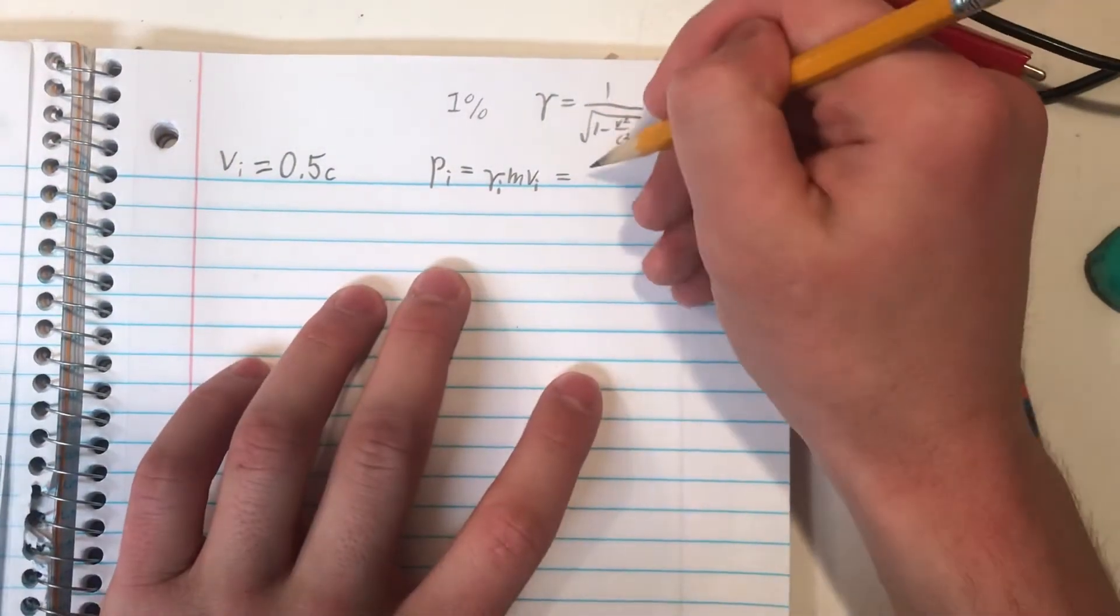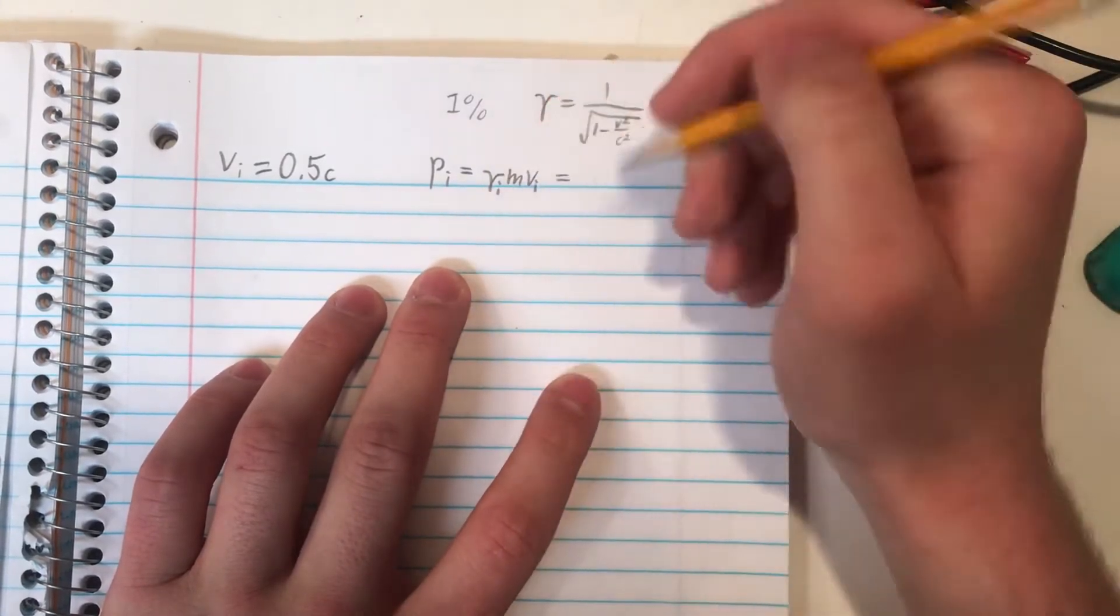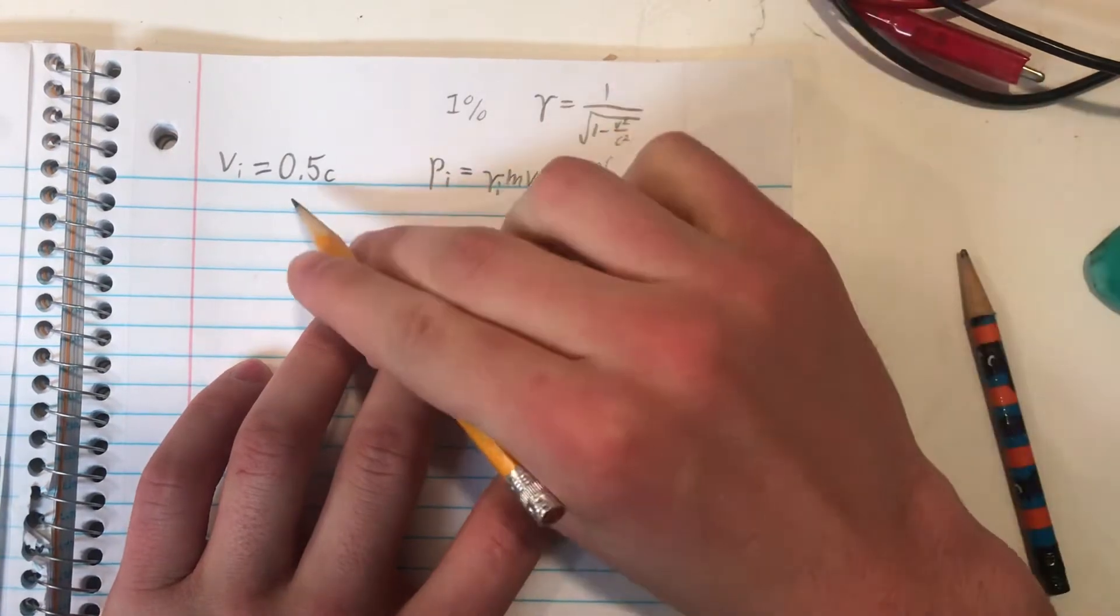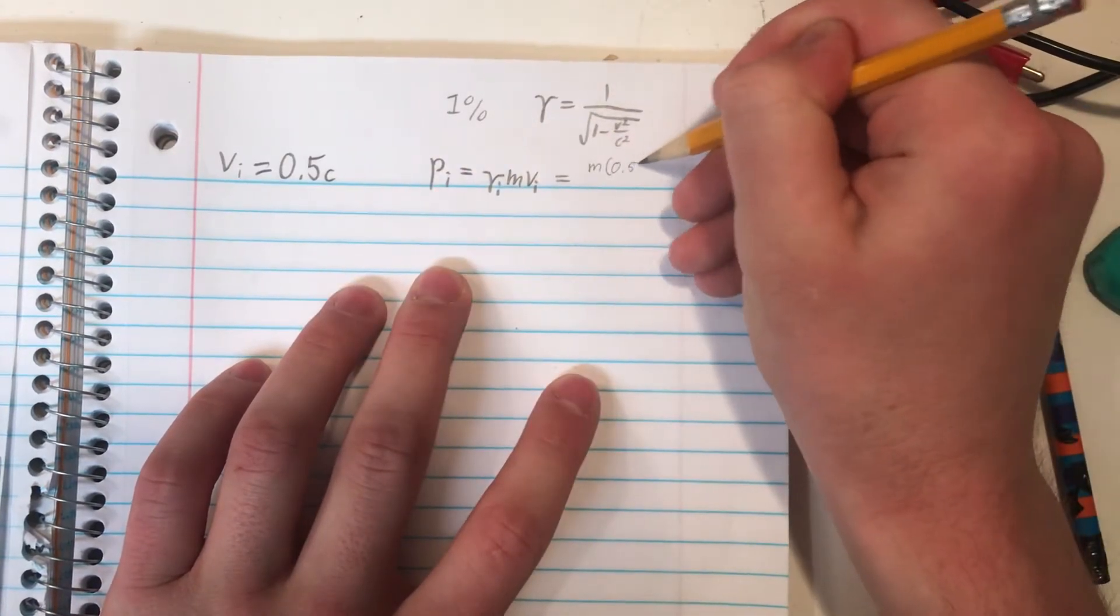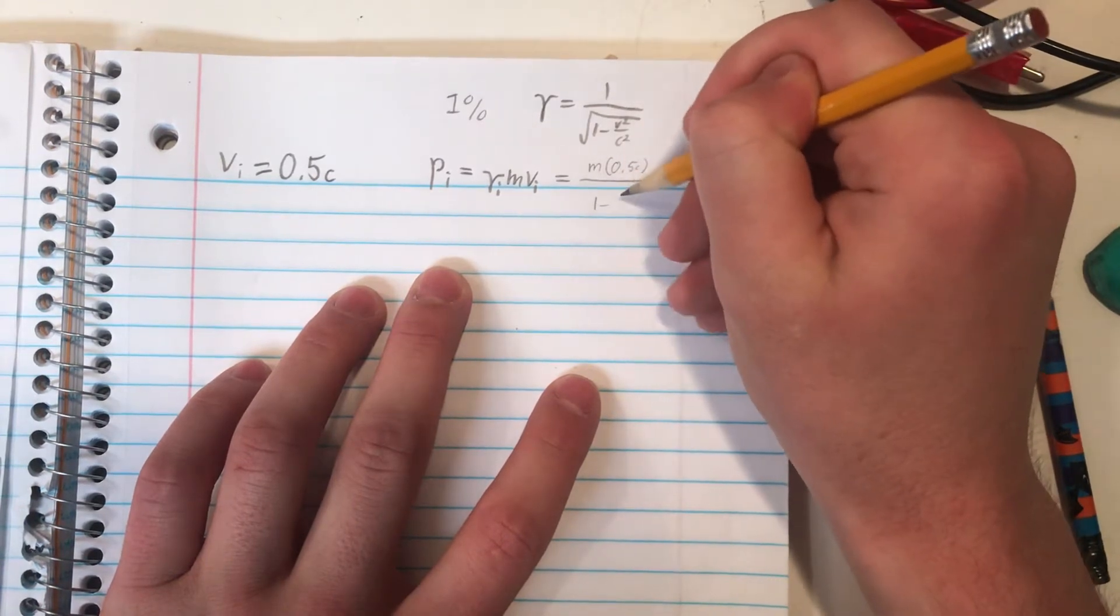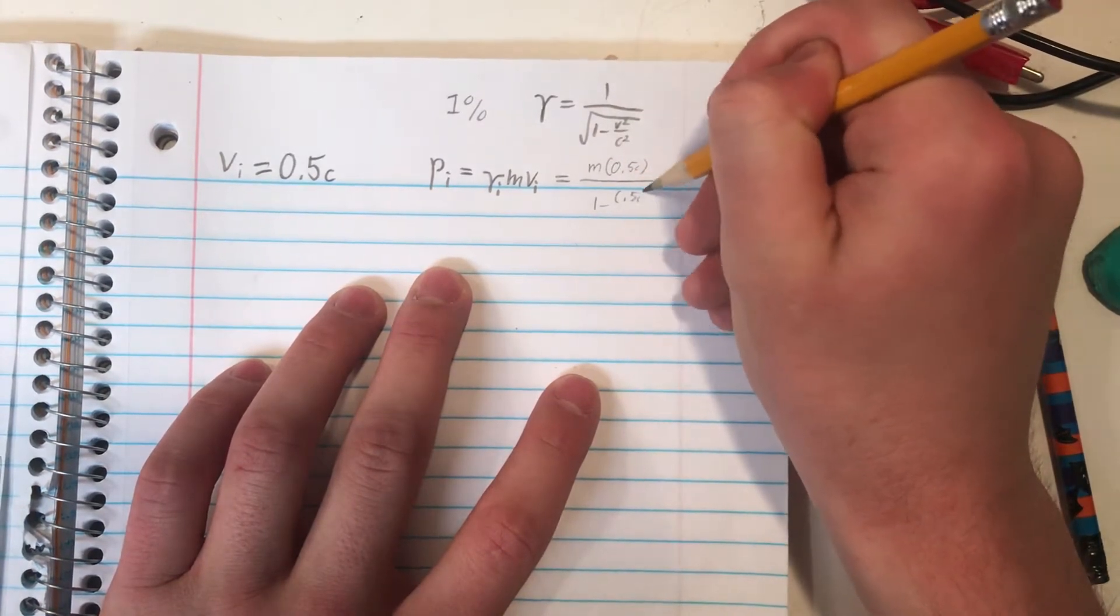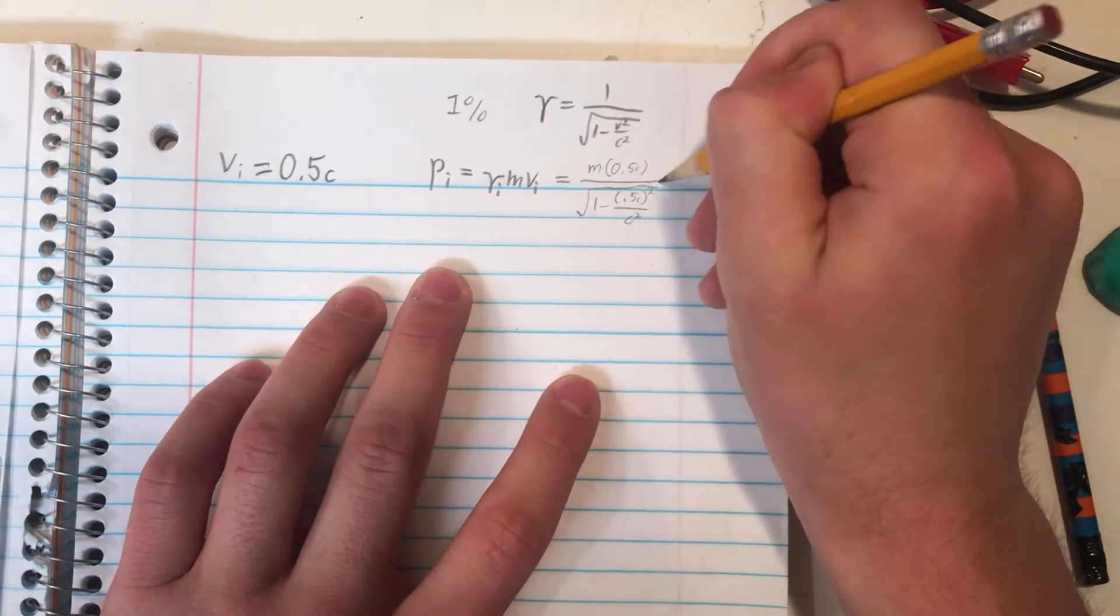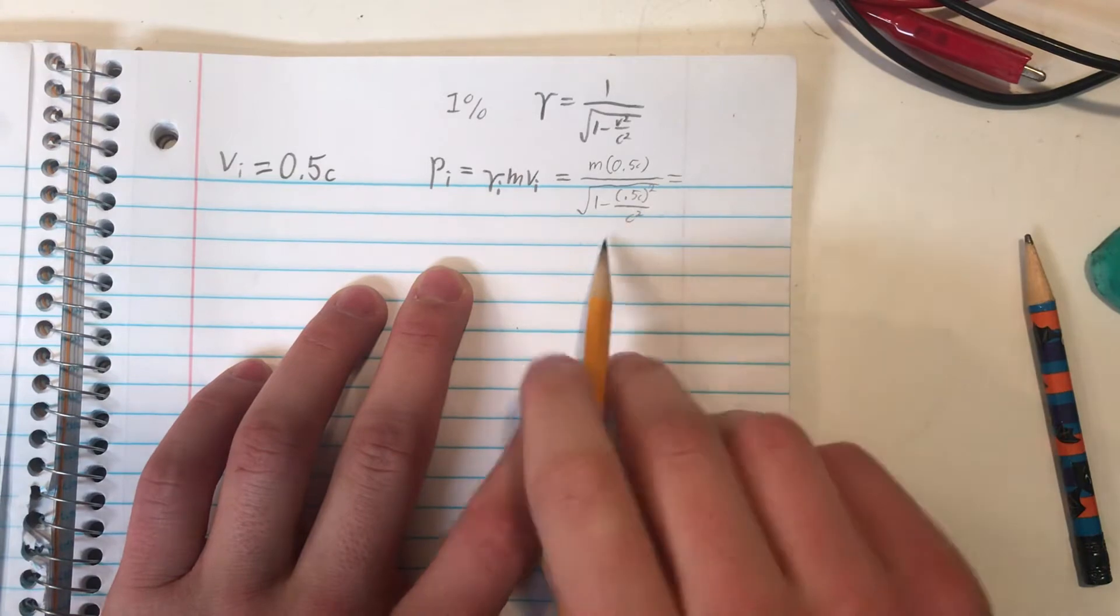So that'll be, we have the m and the v at the top, that's going to be m times our speed, so half the speed of light. So 0.5c divided by 1 minus 0.5c again, in the denominator here, over c squared. So now plug this into your calculators to get an approximate.